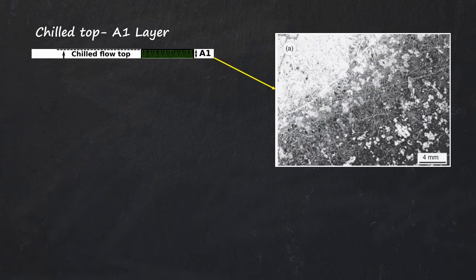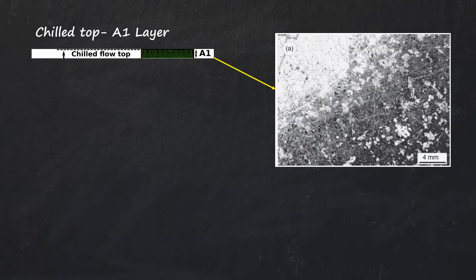A chilled margin and A1 layer is a mm to 10 cm thick layer having micro spinifex texture with small polyhedral phenocrysts amidst the platy elongate randomly oriented skeletal olivine grain matrix. Flow top A1 layer is 5 to 150 cm thick layer made up of aphanitic to very fine grained lava and cut by close-spaced polyhedral joints.